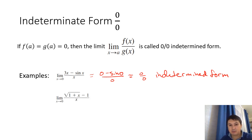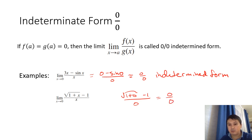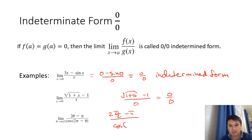Another example is (√(1+x) − 1)/x. If you let x go to 0, the numerator goes to √1 − 1 = 0 and the denominator goes to 0, so this is again 0/0, an indeterminate form. A third example: as θ goes to π/2, we get (2·(π/2) − π) divided by cos(2π − π/2), which gives 0 at the top and cos(3π/2) = 0 at the bottom — again 0/0.